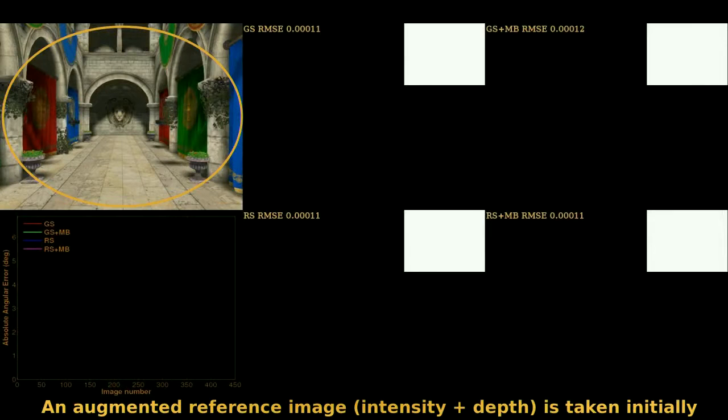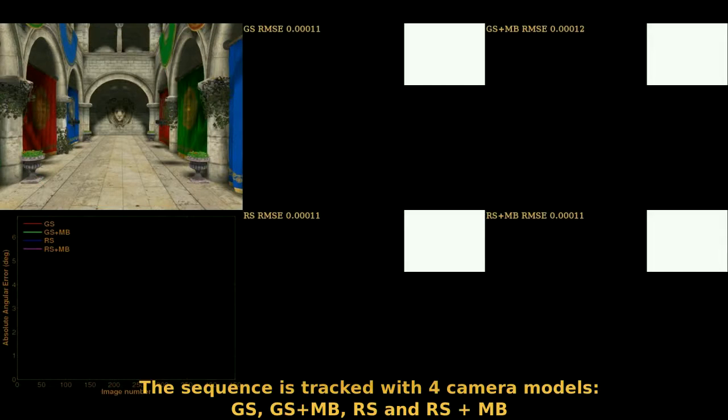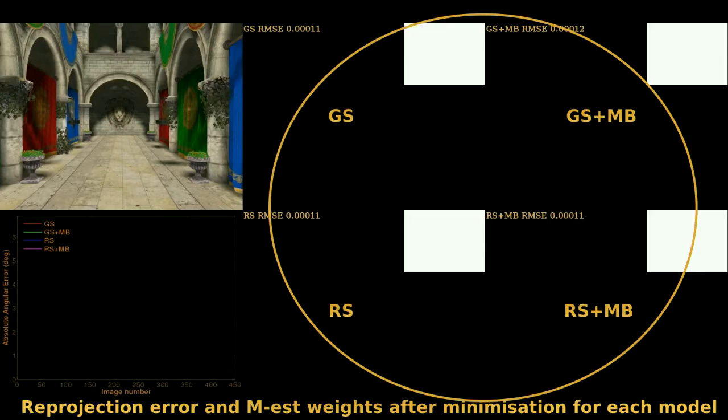The next results show six degrees of freedom tracking from a sequence with blur and rolling shutter deformations. Top left is the sequence and the first image is chosen as the reference image. Four different tracking approaches are shown. Middle top is the classic model that doesn't account for deformations. Top right accounts only for motion blur. Middle bottom accounts only for rolling shutter. And right bottom models both deformations.